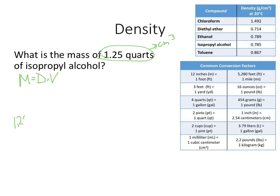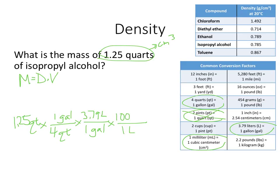So factor label this 1.25 quarts. I have quarts in pints, and I have quarts in gallons. I have gallons and liters, liters and milliliters to centimeters cubed. So I think that's the way I'm going to go. 4 quarts, 1 gallon, and then 1 gallon, 3.79 liters, and then 1 liter is 1,000 milliliters. This is not on your chart, but this is how I'm going to convert metric. And remember, a milliliter and a centimeter cubed are the exact same thing. So that's a really simple one.